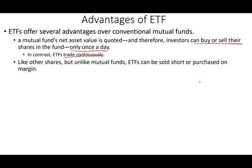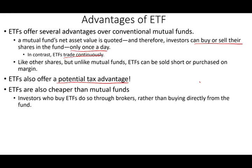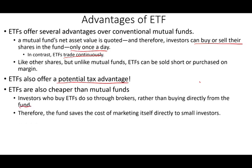Like other shares, ETFs can be sold short and bought on margin. They also offer a potential tax advantage. With a mutual fund, you have no control over when you have capital gains and losses — the mutual fund company buys and sells shares and passes those gains and losses to you via pass-through status, and you have to pay taxes. With an ETF, you decide when to pay taxes — when you actually sell the ETF. So you have more control and it offers a tax advantage.